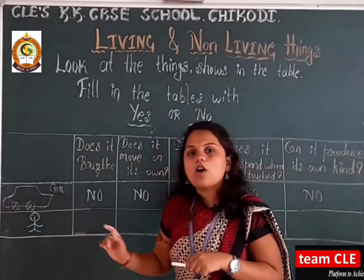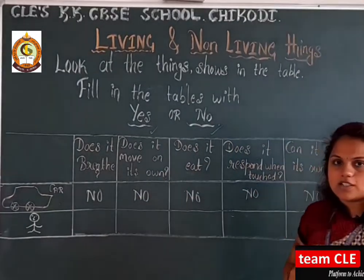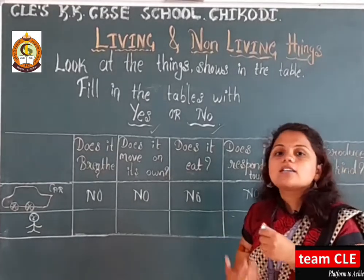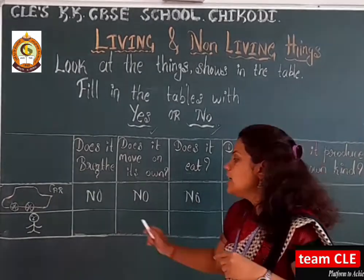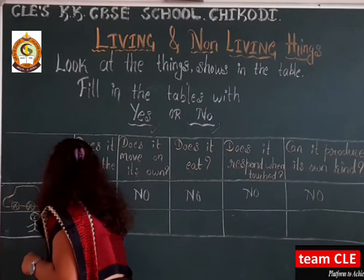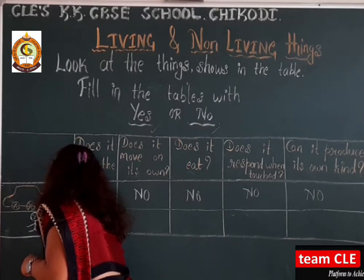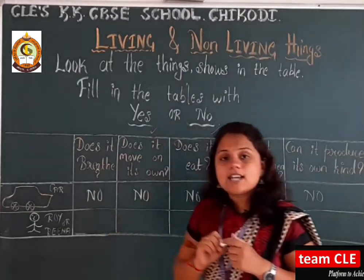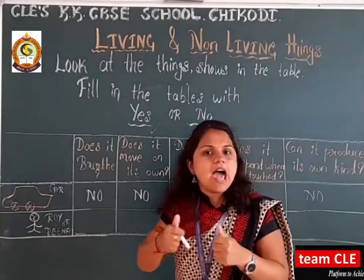Now the questions are for Reena and Roy. Reena and Roy have to answer these questions. Now, Roy — is he an example of a human being or a plant? Roy is a human being. He is a man, he is a boy.